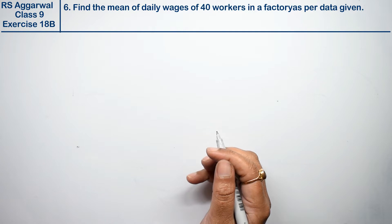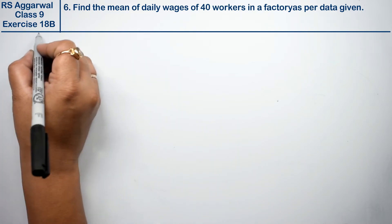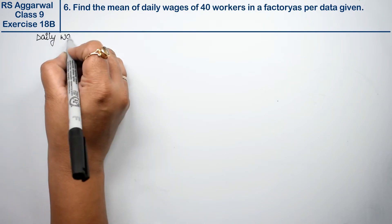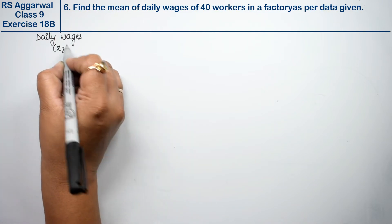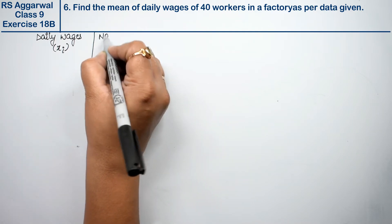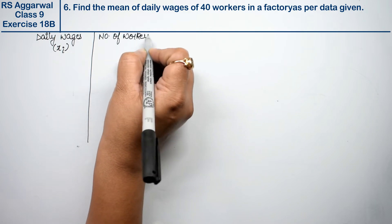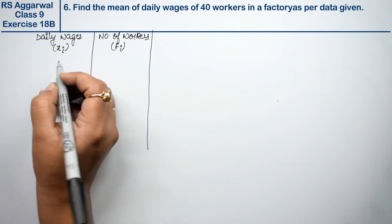Friends, what do we need to find? Daily wages. We have to find daily wages of 40 workers. What do we need? xi. We have to find frequency, we need the number of workers. That is same thing, right? So now we need to set down daily wages.